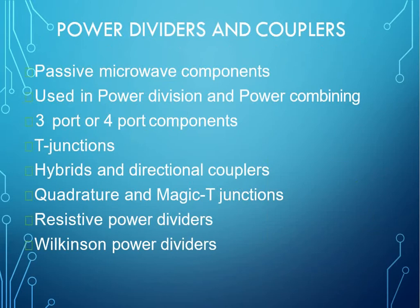Power dividers and couplers are passive microwave components used in many different applications, mainly for power division and power combining. There are both three-port and four-port components. Some are listed below: T junctions, for example E-plane T and H-plane T, hybrids and directional couplers, quadrature and magic T junctions.